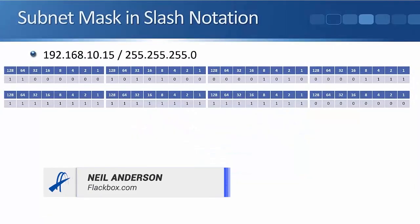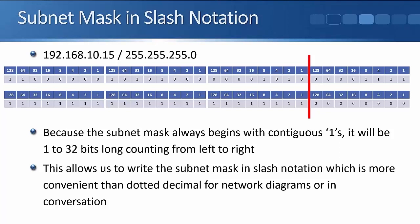We can also write the subnet mask in slash notation. 255.255.255.0 is writing it in decimal notation. There is a line between the network portion and the host portion — it's always contiguous ones followed by contiguous zeros. Because it's contiguous, we can count the ones in a row. Here we have 24 ones — each octet equals 8, so that's 8, 16, 24. So 255.255.255.0 can be written as slash 24; those two things mean exactly the same thing.